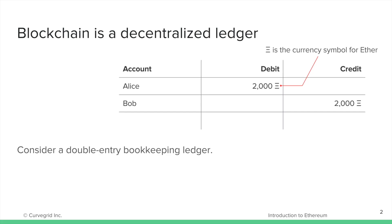We're going to start with a transaction between two parties, Alice and Bob. In this case we have Alice paying Bob 2000 Ether, which is the currency of the Ethereum blockchain. Another term for the table on this slide is a ledger, and this style of ledger is called double entry because each entry is recorded twice — once in the debit column and once in the credit column. This is essentially how the Ethereum blockchain records transfer of value between two parties.